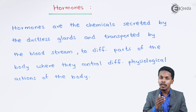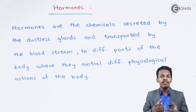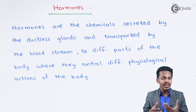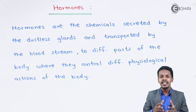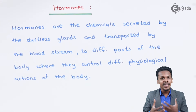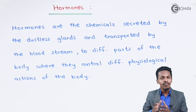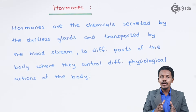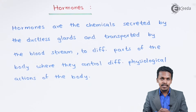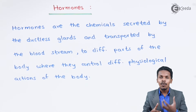For example, thyroxine is secreted by a particular gland present in our neck. That hormone increases the consumption of oxygen in the body, and that is how it is very important for us to understand the study of hormones.